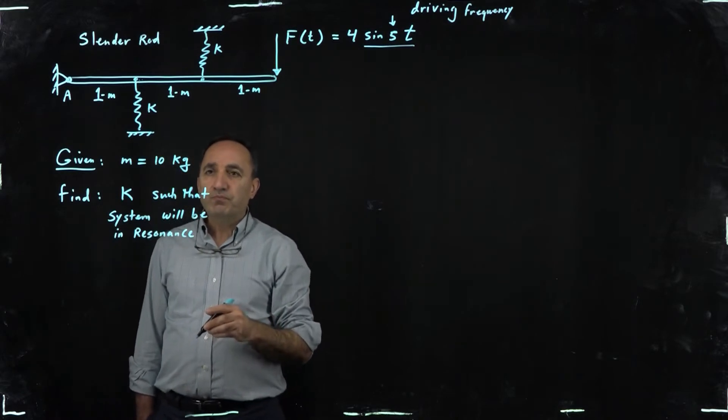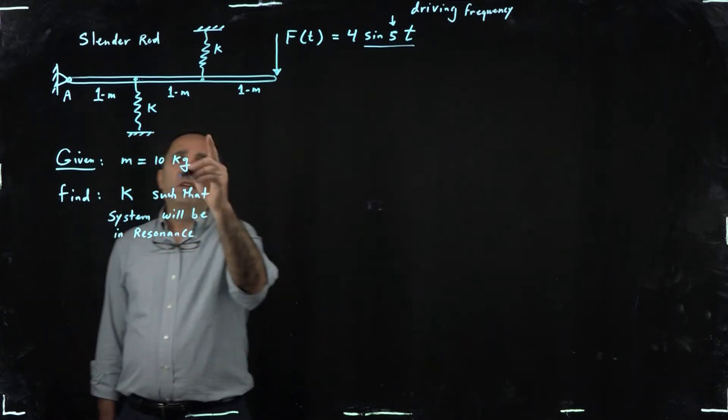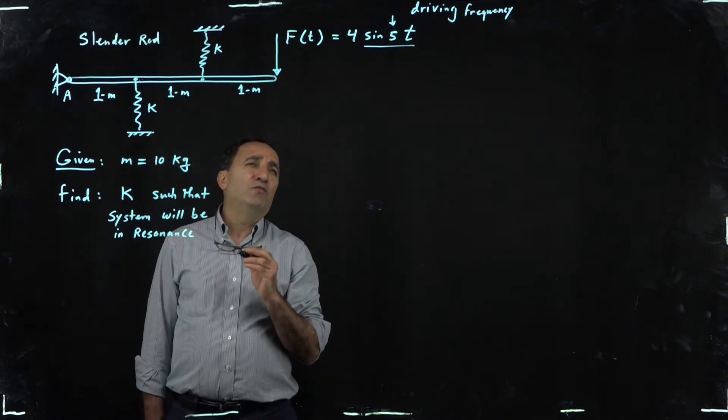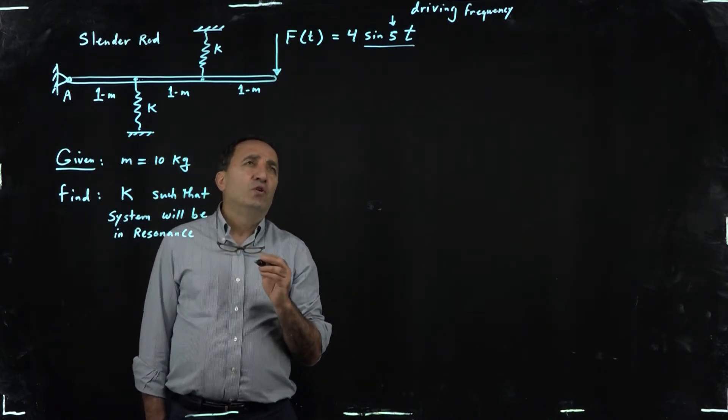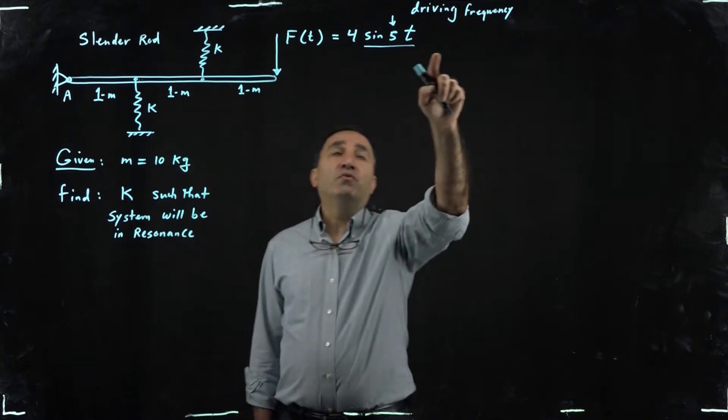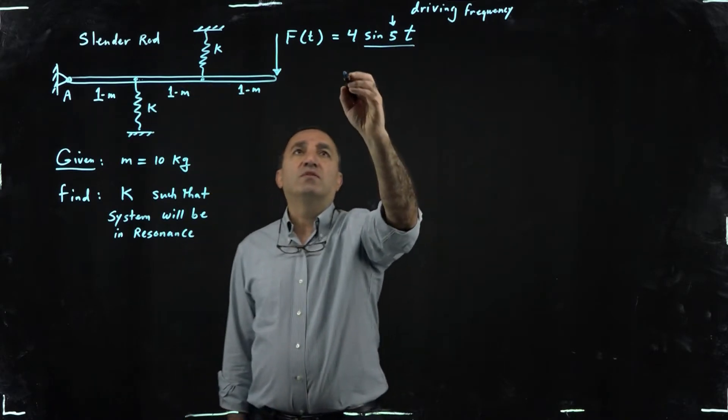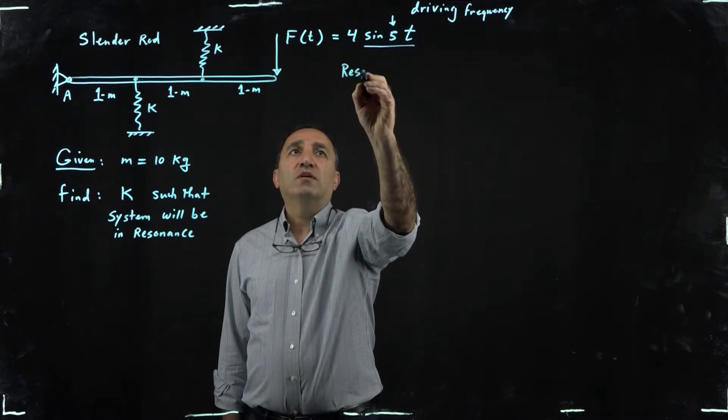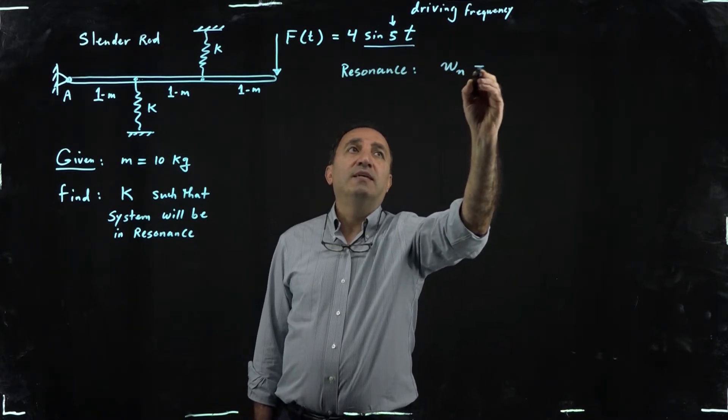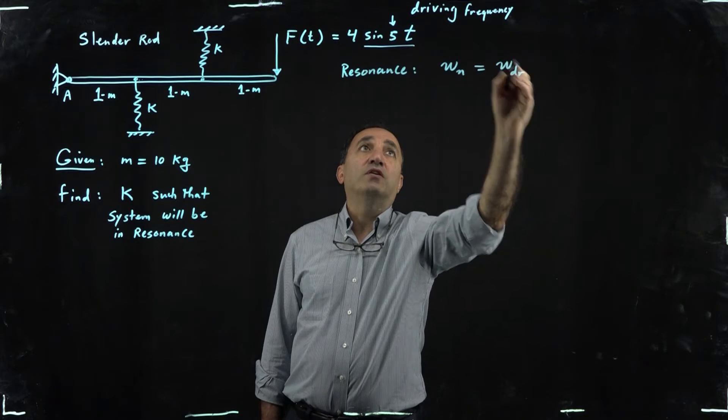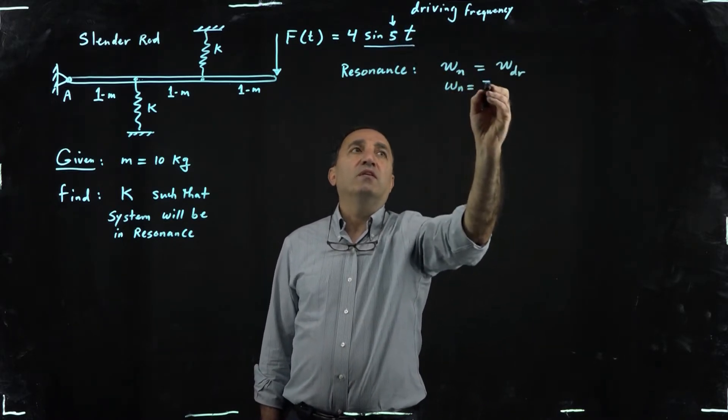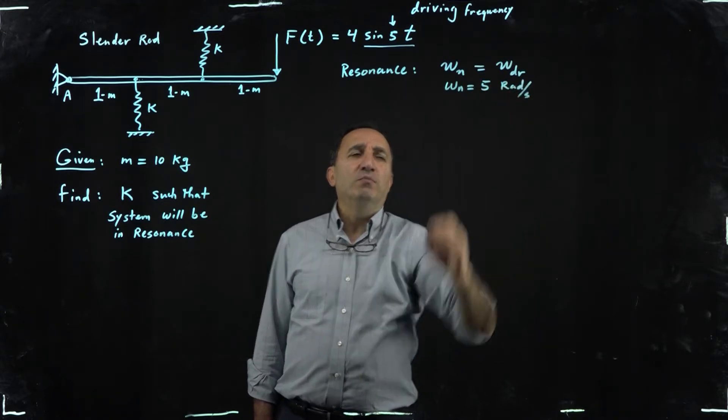So the problem says okay given the mass and this setup, you want to find K, the stiffness, such that the system will be in resonance. Now resonance means what? Resonance means or it happens when the frequency, the input frequency, is the same as the natural frequency of the system. So resonance implies that omega n is the same as omega dr, this driving frequency.